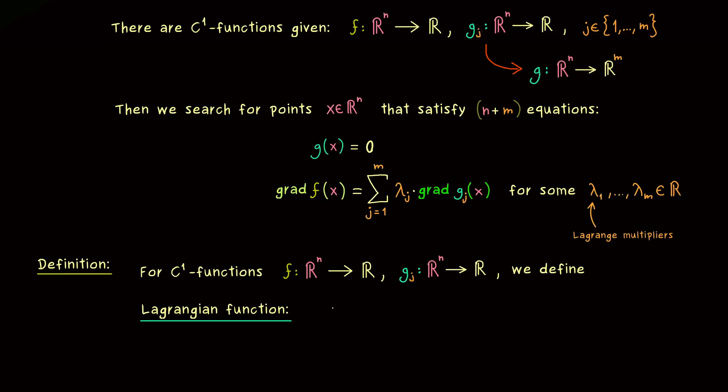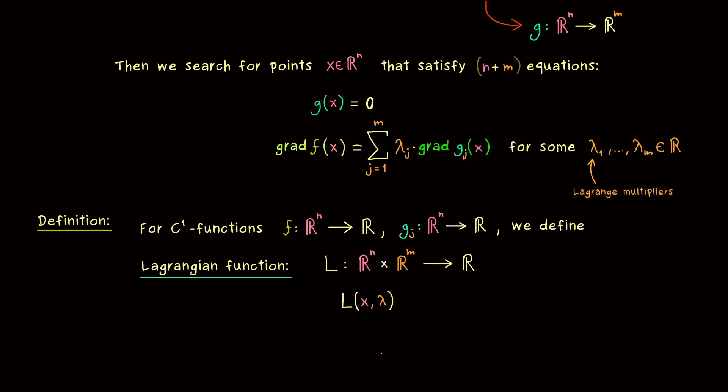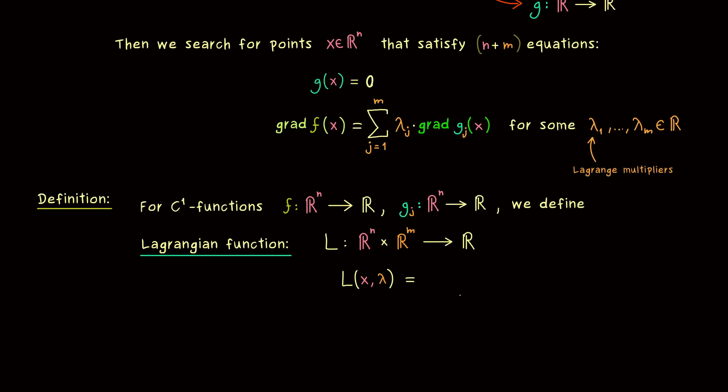Usually it's denoted by capital L or by capital lambda. The most important thing to remember is that it gets two inputs: a vector in ℝⁿ and a vector in ℝᵐ. But still, it should be a real-valued function, so the codomain is given by ℝ. We write L of x and lambda, where lambda is a vector with m components. The only thing you have to remember now is the definition of this Lagrange function.